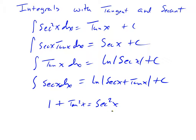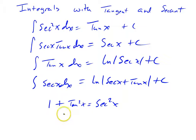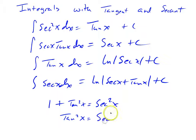This allows me, anytime I see a secant squared x, to replace it with 1 plus tangent squared x. Or, if I had a tangent squared x, I can subtract the 1 over to the other side and replace it with secant squared x minus 1.